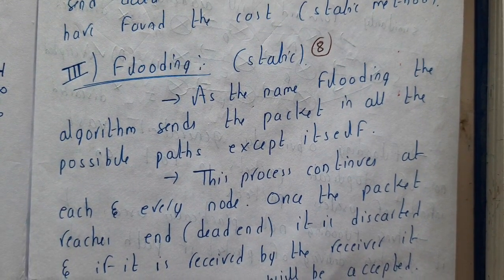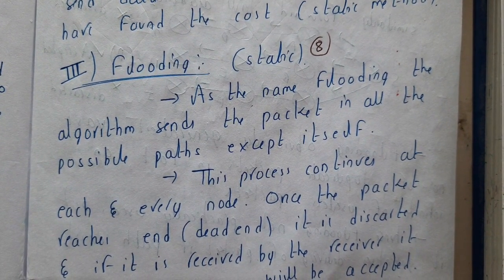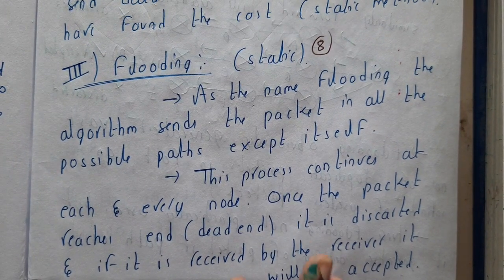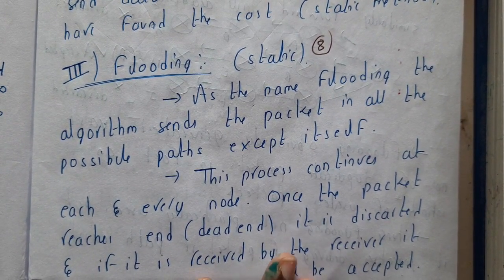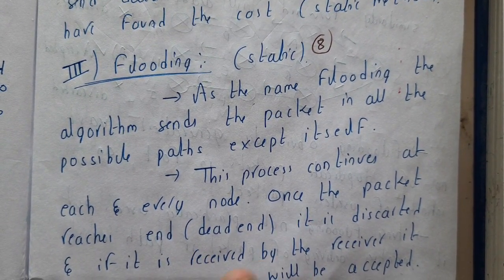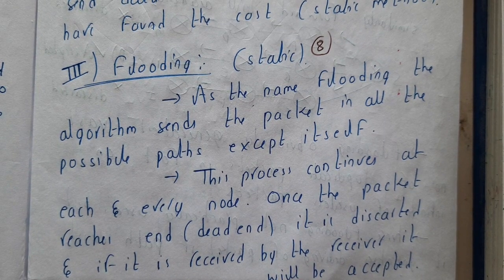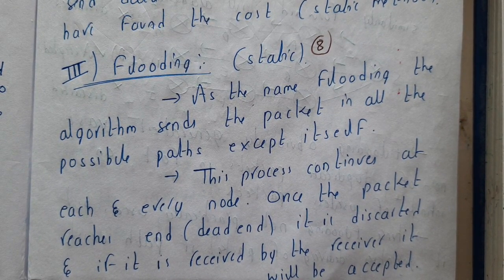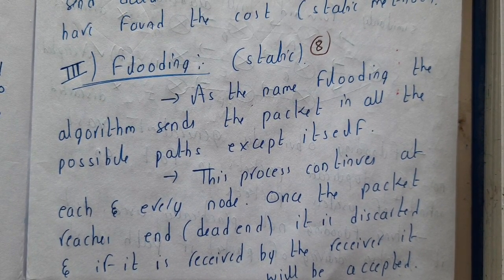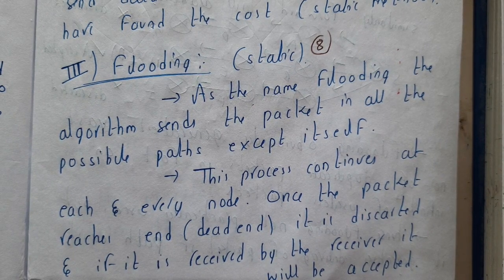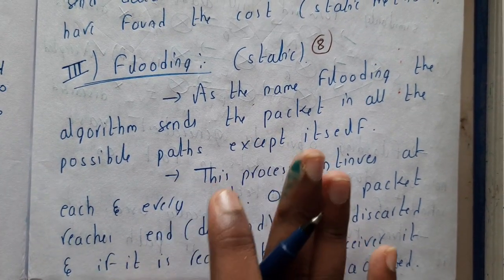Hello guys, we are back with our next lecture. In this lecture, let us go through the third routing algorithm, that is flooding. Flooding is also a static type of algorithm. From the name itself we can say it is like floods - when there is an excess amount of water flow other than due to rains, that is flooding.